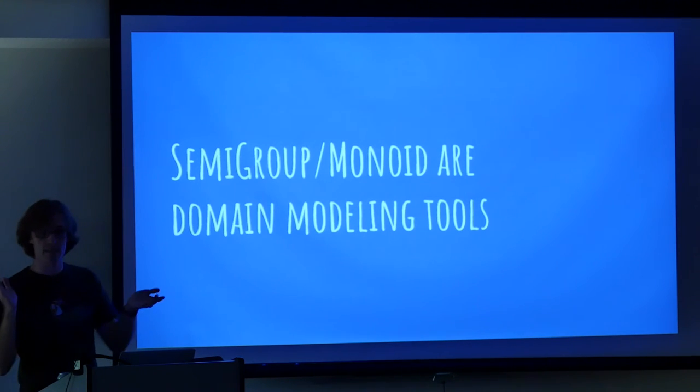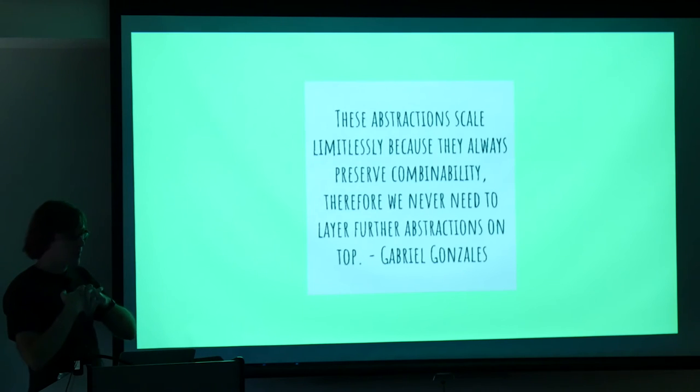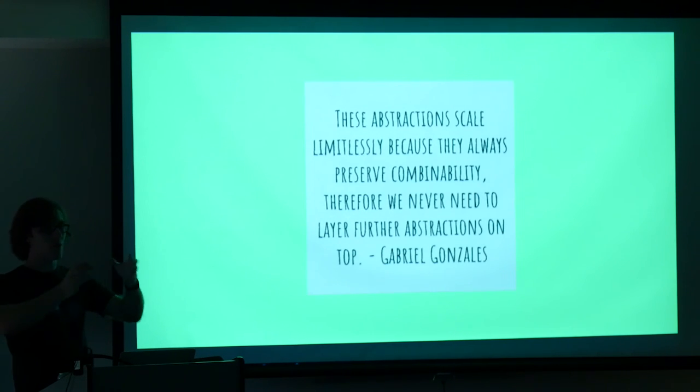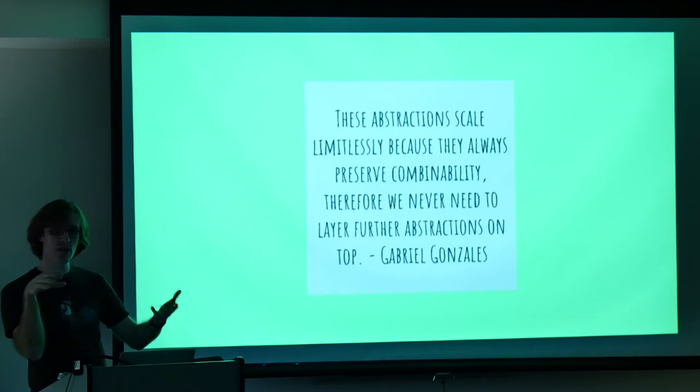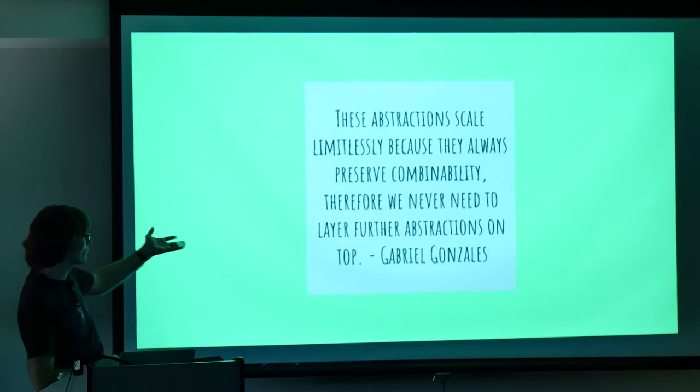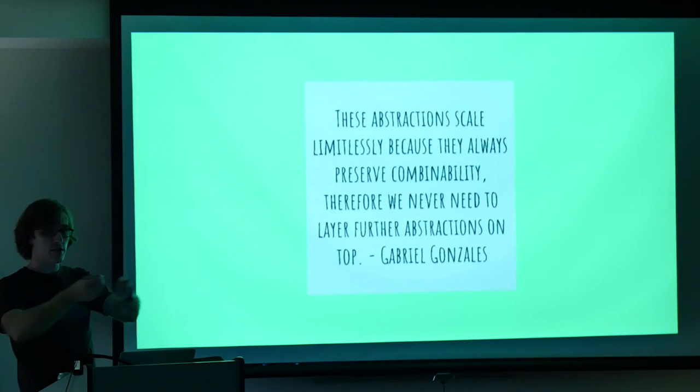So the cool thing about this is what is that possibly useful for? When you're dealing with monoids, an important aspect of them is that when you can think in terms of just monoidal structures, it can cover a lot of use cases for you. So you don't have to make new abstractions everywhere. You can just use monoid in a whole bunch of places. And this quote by Gabriel Gonzalez: these abstractions scale limitlessly because they always preserve combinability, therefore we never need to layer further abstractions on top. And what he's talking about here is if you have a monoid in a monoid, you combine those and you get the same monoid. And you can keep doing that.